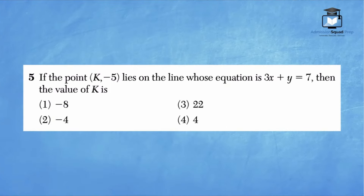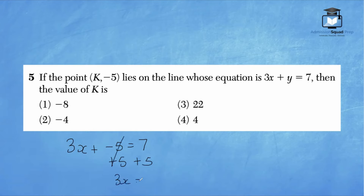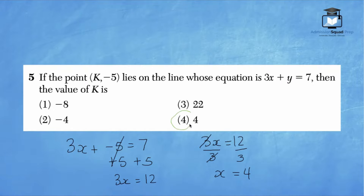For question number 5, if the point (k, negative 5) lies on the line whose equation is 3x plus y equals 7, then the value of k is. We are given the value of y and need to find x. Replace y with negative 5: 3x plus negative 5 equals 7. Add 5 on both sides to get 3x equals 12, then divide by 3. x equals 4. Choice 4 is the correct answer.